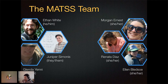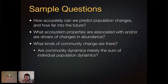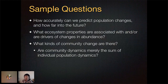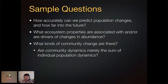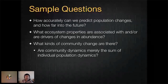In general, our lab is interested in lots of big ecological questions. Some of them include: how accurately can we predict population changes? How far into the future can we make those predictions? What ecosystem properties are associated with or are drivers of changes in abundance? What kinds of changes occur in whole ecosystem communities, and are those changes merely the sum of individual population dynamics, or are interactions between different populations in an ecosystem important for directing that community-level change?